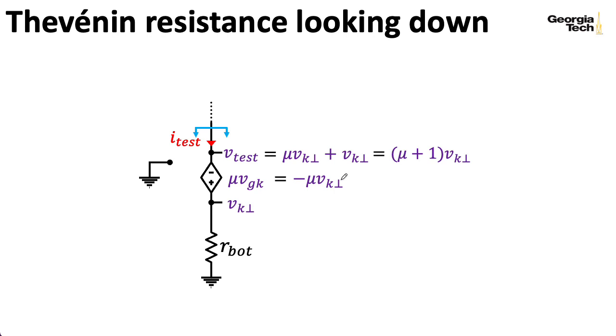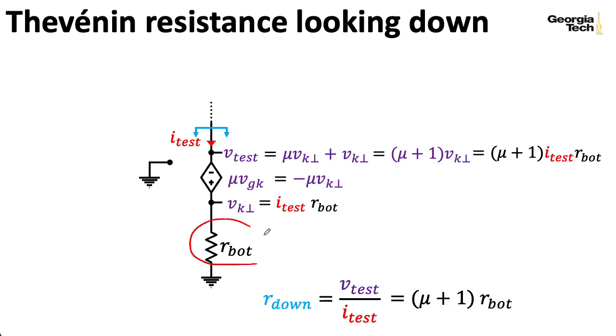But that voltage itself has a minus sign, so those cancel giving us this plus sign here. And I can simplify that to Mu plus one times that cathode voltage. And well, what's the cathode voltage? Well, by Ohm's law, that's just this resistance times the test current. So I can plug that in. So I can compute the Thevenin resistance as the test voltage that is induced by our test current. So that's just Mu plus one times our R-Bat resistance because the I tests wind up canceling out. So that's pretty nice.